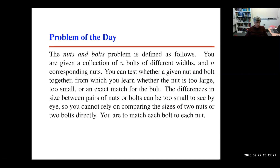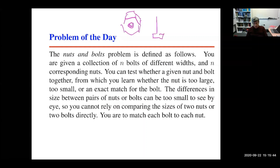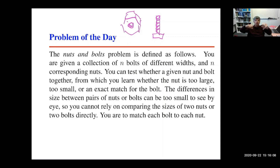Let's talk about the nuts and bolts problem. You are given a collection of n nuts and n bolts. A nut has screw threads in it, and a bolt looks something like this. Each bolt has a nut that is designed to screw into it — it's a fastening thing. If you have the right size nut it fits on the right size bolt. If the nut has too small a hole, it doesn't go in. If the nut has too big a hole, it doesn't stick.